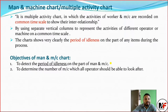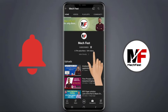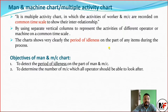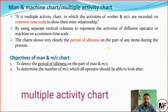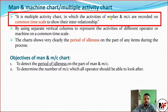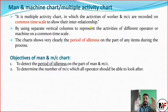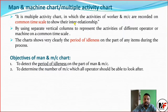Today we are going to discuss the man and machine chart. The man and machine chart is also called a multiple activity chart. It is a multiple activity chart in which the activities of worker and machine are recorded on a common time scale to show their interrelationship, using separate vertical columns to represent the activities of different operators or machines.